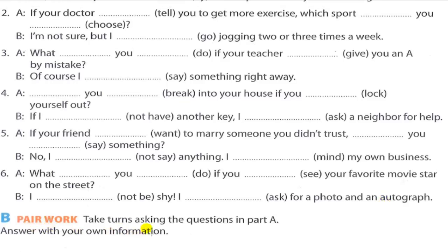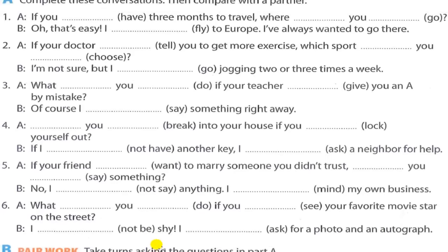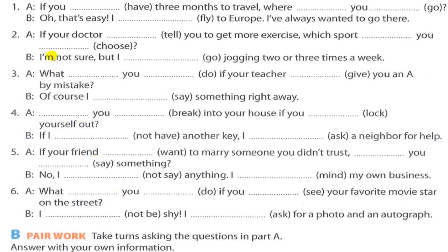Part B — Pairwork: one partner asks the questions from Part A, the other answers with their own information. Example: 'If you had three months to travel, where would you go?' — 'Oh, that's easy. I'd fly to Luxor — it's a beautiful city.' or 'I'd fly to Hurghada — it's a wonderful summer resort.'